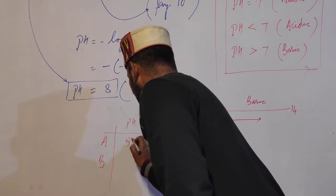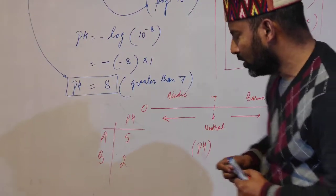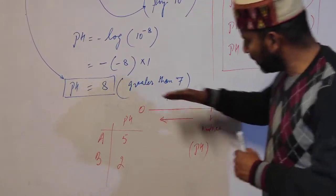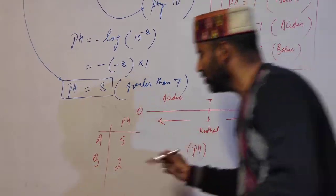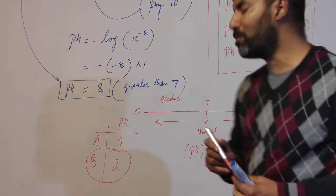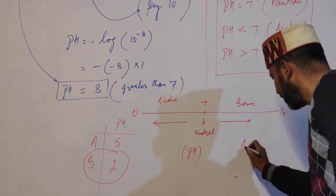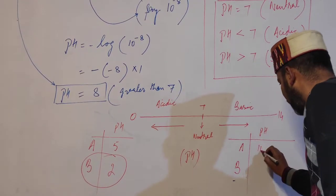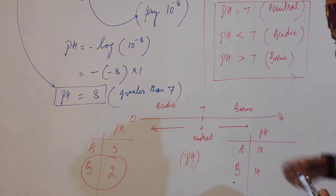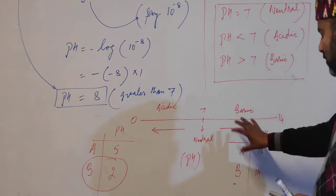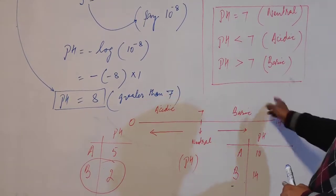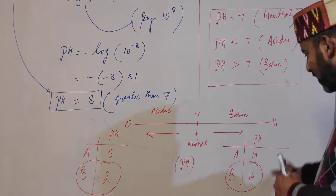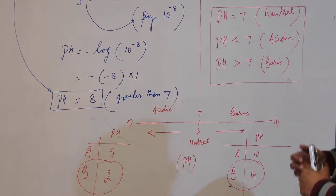For example, if solution A has pH 5 and solution B has pH 2, solution B is more acidic because lower pH means greater acidic character. Similarly, if solution A has pH 10 and solution B has pH 14, solution B is more basic because greater pH means greater basic character.